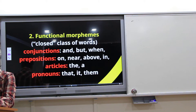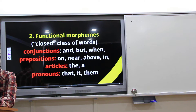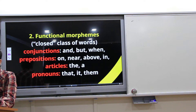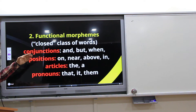In grammatical terms, there are fixed morphemes. These can be, for example, conjunctions, plural suffixes, and pronouns. We call them 'closed' because you cannot add new functional morphemes to the language, like conjunctions and prepositions.